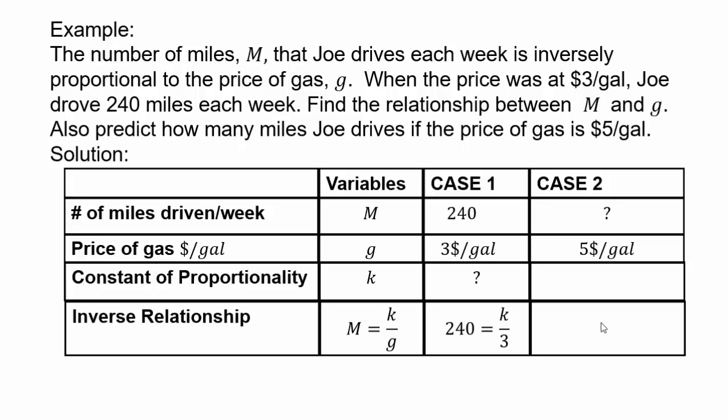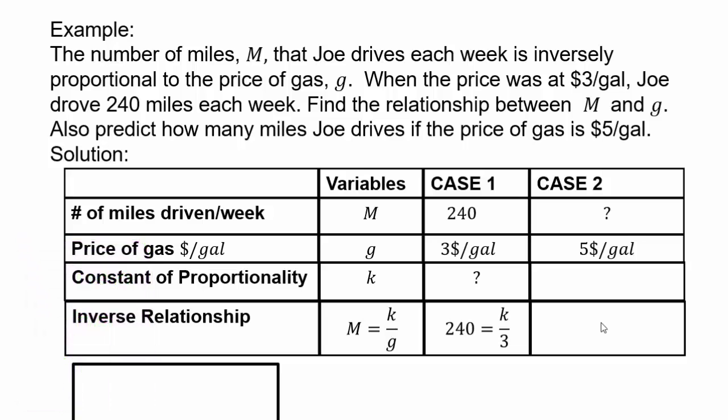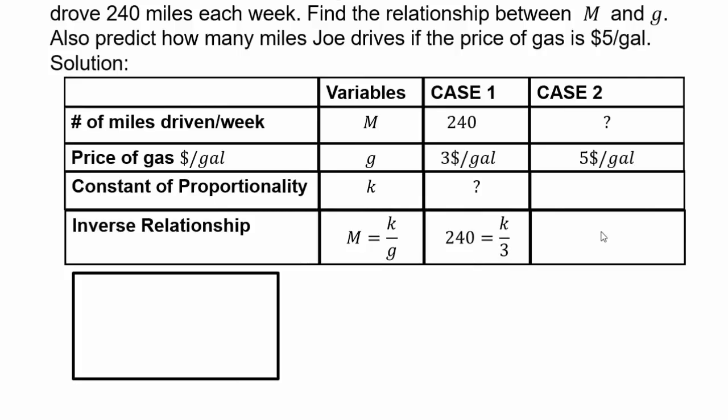So we have m equals k over g. So in case one, we have 240 equals some constant divided by 3. So pause the video here and solve the equation for k. So case one, you're going to solve 240 equals k over 3. You can use a calculator if you need one, but here you don't need one. We're going to have 240 equals k over 3. So multiply both sides by 3 and we'll give you k equals 720. So we have our k is 720.